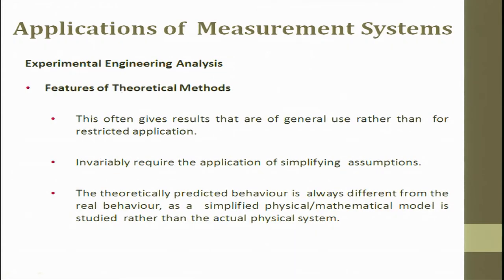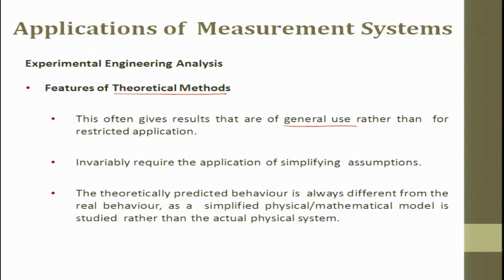What are the features of a theoretical method? This often gives results that are of general use rather than restricted application. For example, in a lathe machine we know feed plays an important role, followed by depth of cut, then followed by cutting speed. This relationship is known - the magnitude of individual responses depends upon tool-workpiece interaction. The general understanding is given by theory, but when I try to take the general use and tweak it to my specific requirements, that is when customization happens. Features of the theoretical method provide a general understanding.